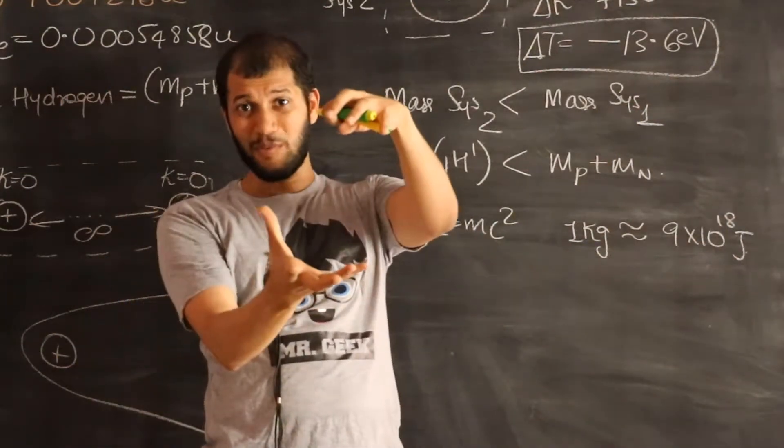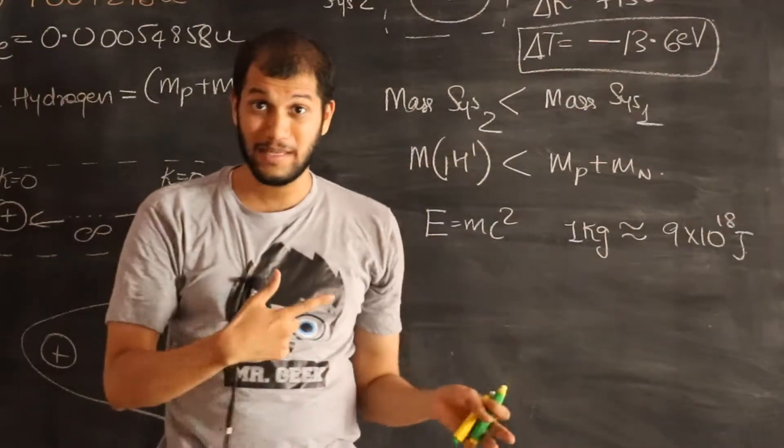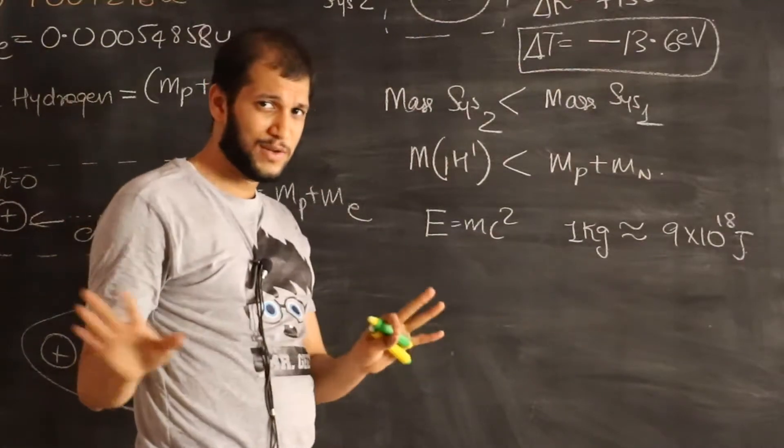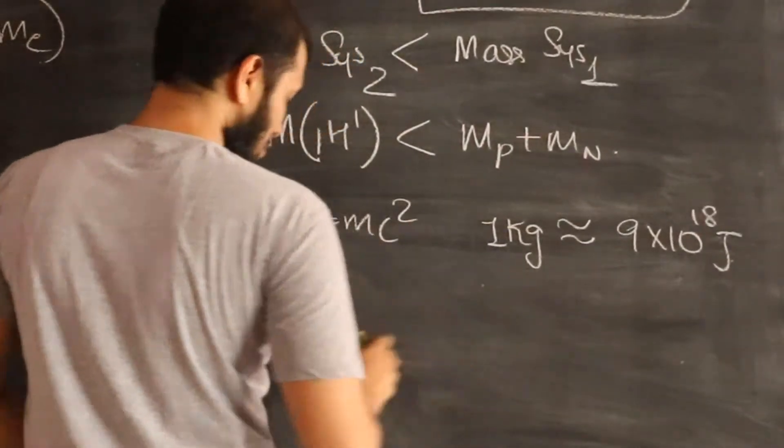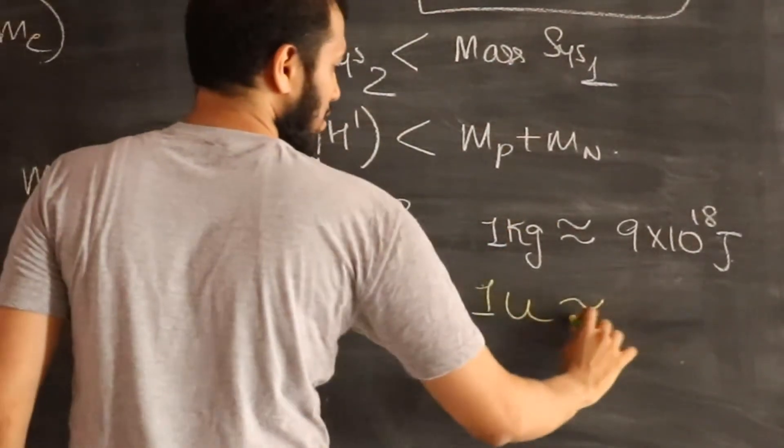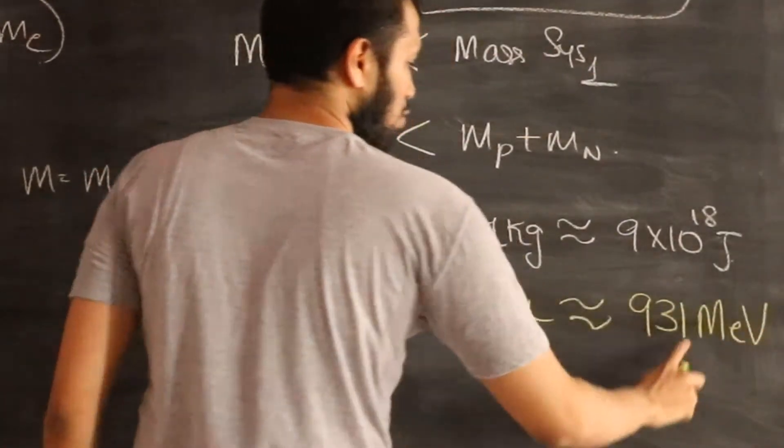it could be in any form, kinetic, potential, thermal, whatever, any form, then that system would have a mass due to the energy of 1 kilogram. That's what it means. But now let's convert that into our smaller units. If you do the conversion, you can do that yourself,